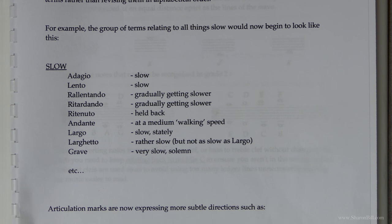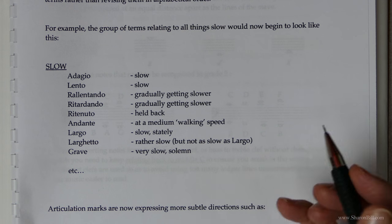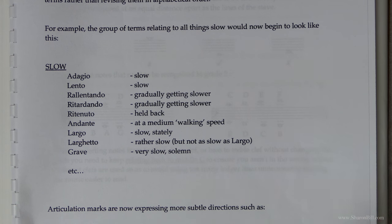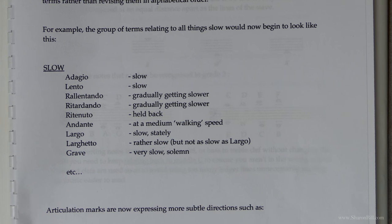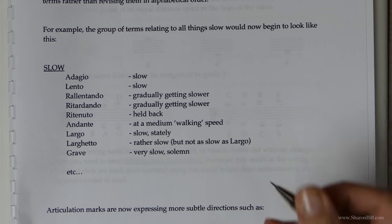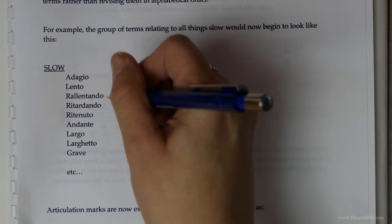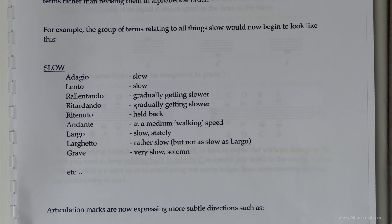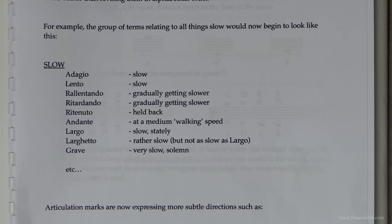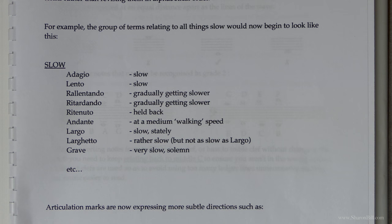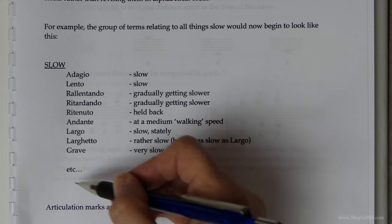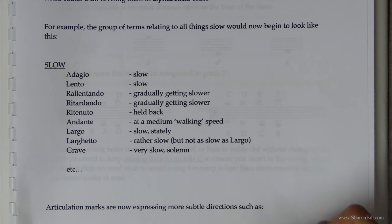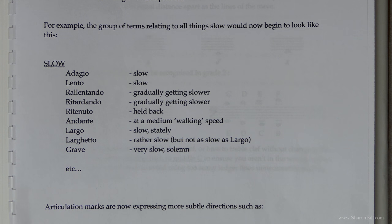It's much easier to remember when things are grouped thematically. Get creative about how you learn these — get somebody to play a game with you and test you. I often play word games with my pupils to help them learn. Maybe colour code it — colour all of the slow terms one colour, and anything to do with fast will be a different colour.